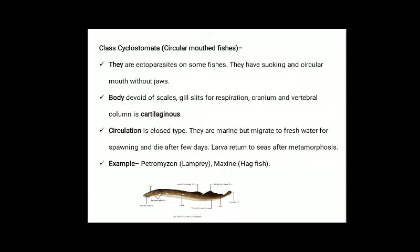Class Cyclostomata: circular-mouthed fishes. They are ectoparasites on some fishes. They have a sucking and circular mouth without jaws. Body is devoid of scales. Gill slits for respiration. Cranium and vertebral column is cartilaginous. Circulation is of closed type. They are marine but migrate to fresh water for spawning and die after a few days. Larvae return to sea after metamorphosis.